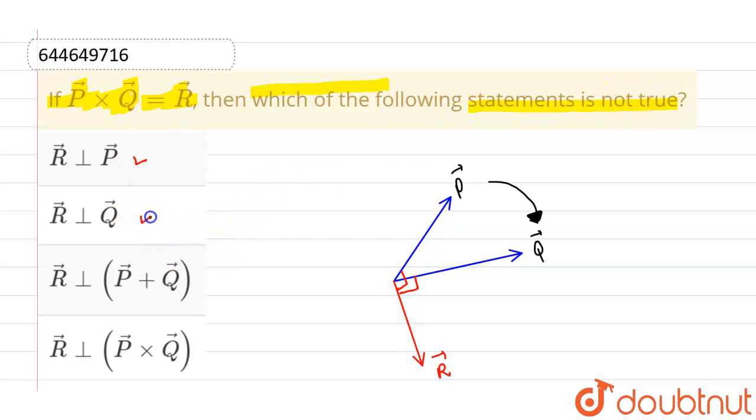Now, the second option is that R-vector is perpendicular to Q-vector. We can see in this picture that R-vector is obviously perpendicular to Q-vector. So second option is also correct but we need a false statement.